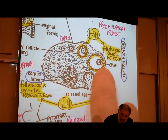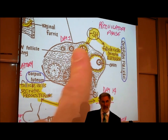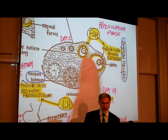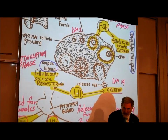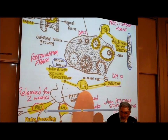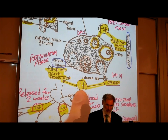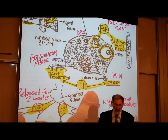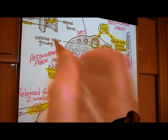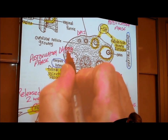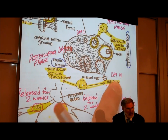An ovarian follicle consists of an egg surrounded by follicle cells. FSH from the pituitary gland causes one follicle to grow bigger and causes the follicle cells to secrete estrogen. Beginning on day 14, the pituitary gland switches and starts releasing LH — luteinizing hormone — rather than FSH. So for the next two weeks, from day 14 to day 28, the pituitary releases LH.